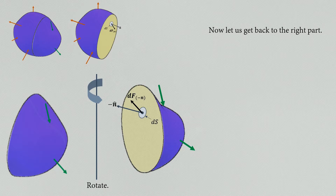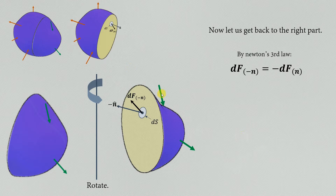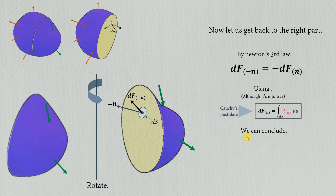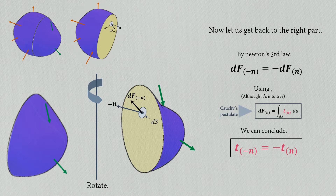By Newton's third law, dFn and dF(–n) are action and reaction pairs. Similarly, the traction vectors defined at every point on the surface ds also occur as action-reaction pairs. Therefore the net impact of these internal forces, if you consider the whole body, is zero.